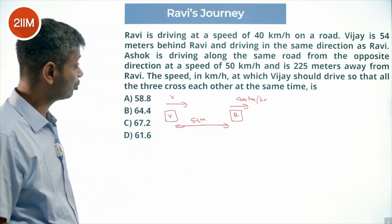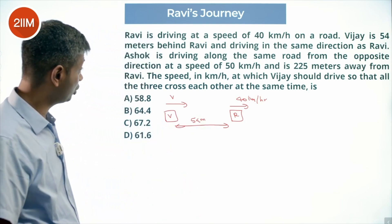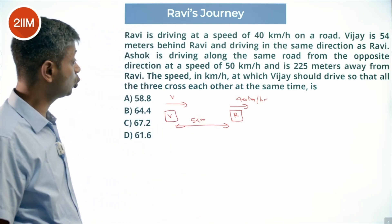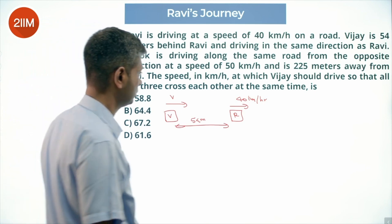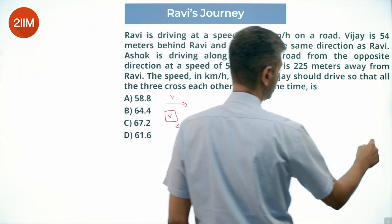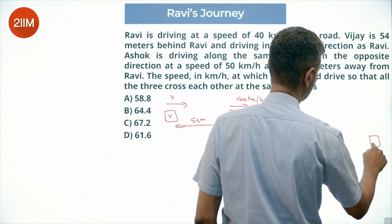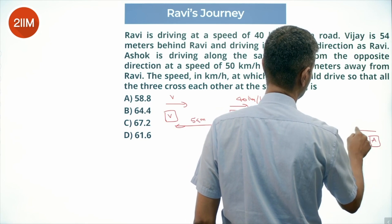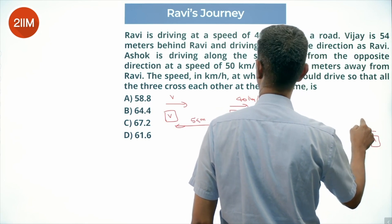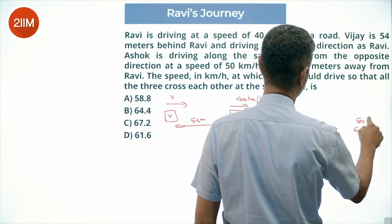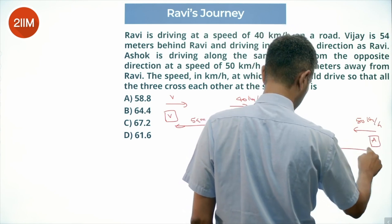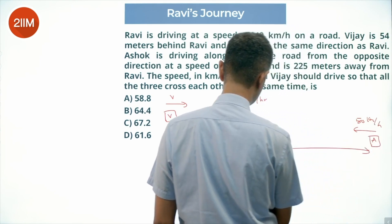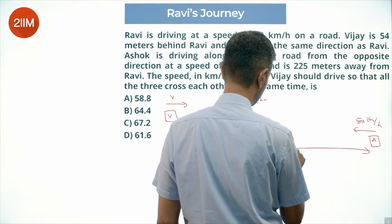Ashok is driving along the same road from the opposite direction at a speed of 50 kilometers per hour and is 225 meters away from Ravi. Ashok is here traveling at 50 kilometers per hour, and this distance is 225 meters.